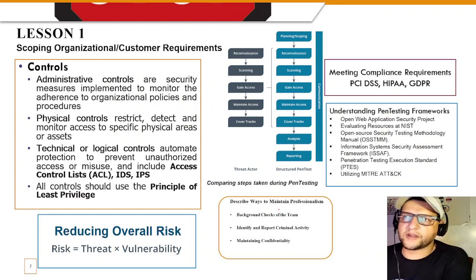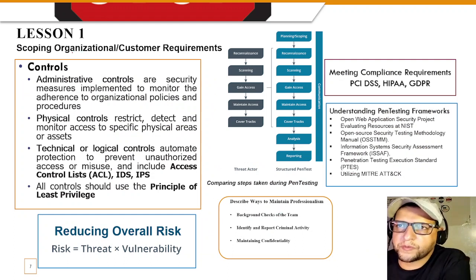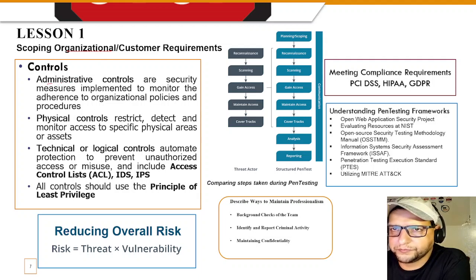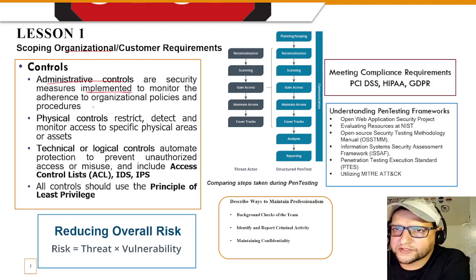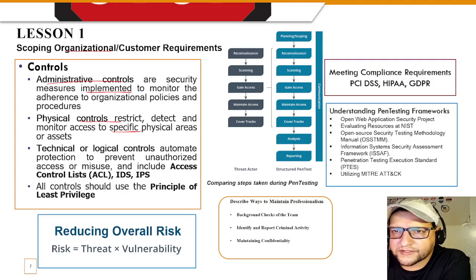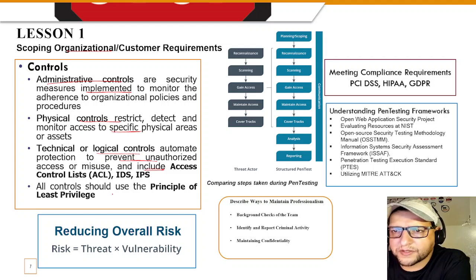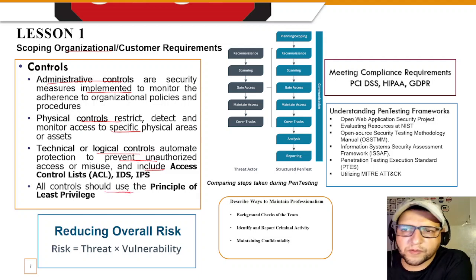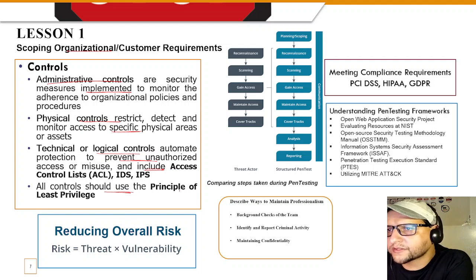In Lesson 1, you'll understand scoping organizational and customer requirements. This includes technical controls, administrative controls, and physical controls. Administrative controls are security measures to monitor adherence to policies and procedures. Physical controls restrict, detect, and monitor access to specific physical areas or assets. Technical or logical controls automate protection to prevent unauthorized access, and include access control lists, IDS, and IPS. All controls should use the principle of least privilege.